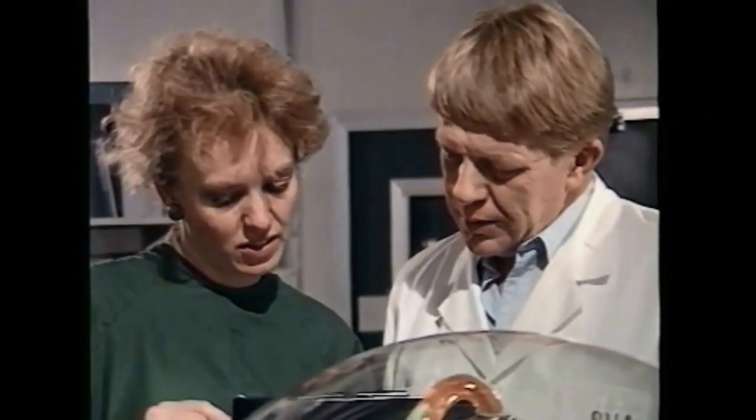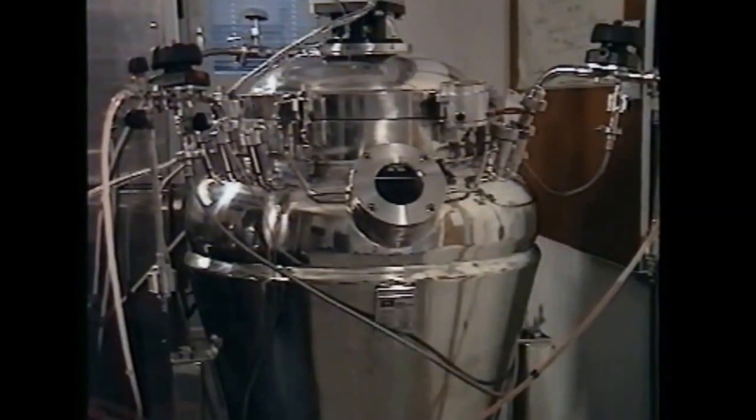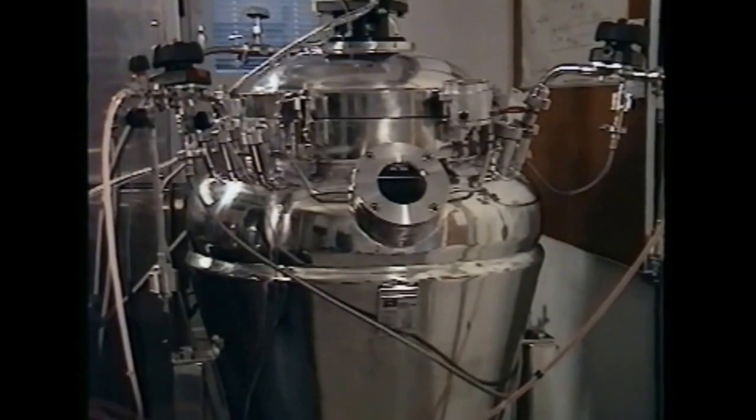Mammalian cells are cultivated in fermenters, either in batch or continuous mode. Usually in a batch process, after the cells have been grown in the fermenter, they need to be separated from the medium.